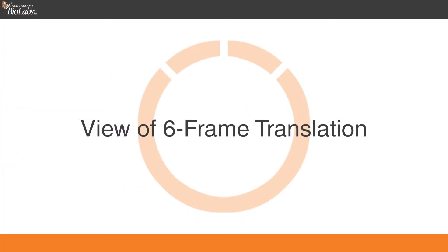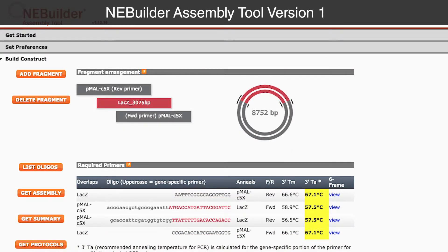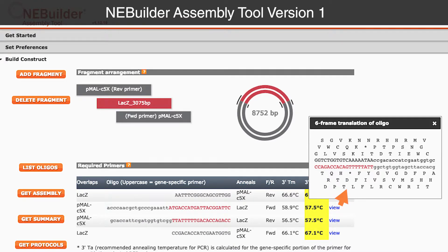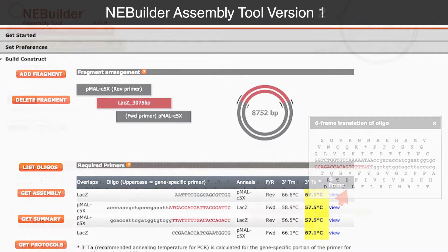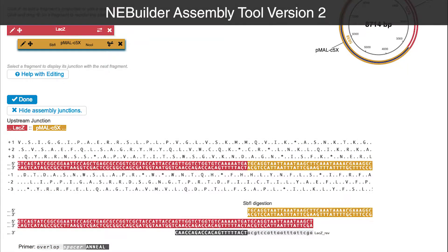View of six-frame translation. Another major change is how the six-frame translation at a junction is viewed. In version 1, this view was accessed from the list of required primers. In version 2, junction details are viewed by selecting a fragment. In addition to the six-frame translation, the new detail view displays the overlaps that were used to create the assembled junction.